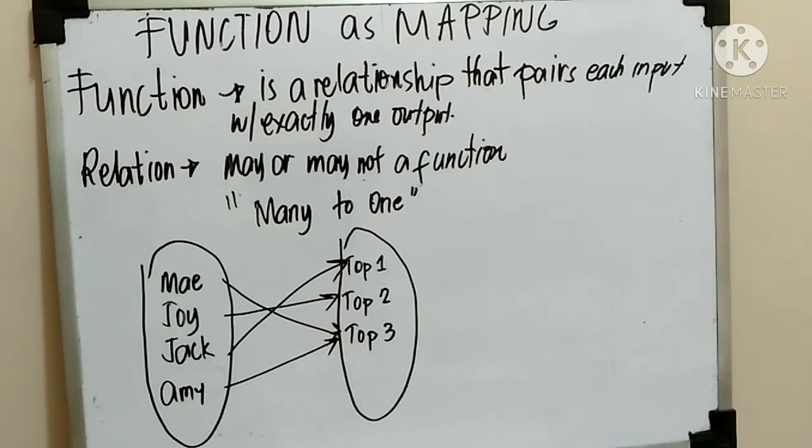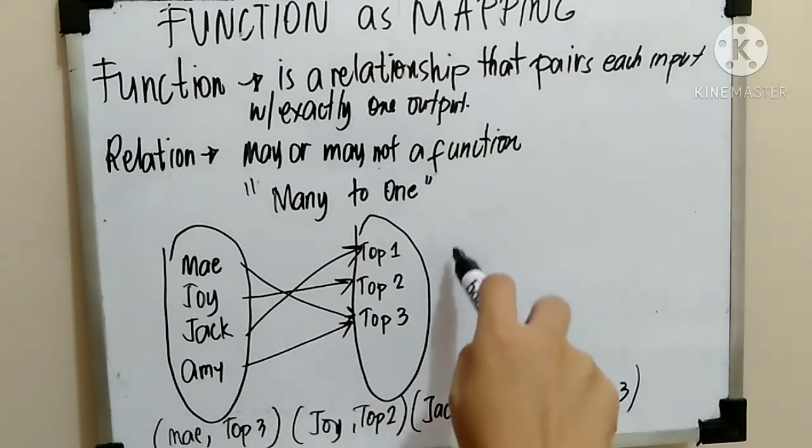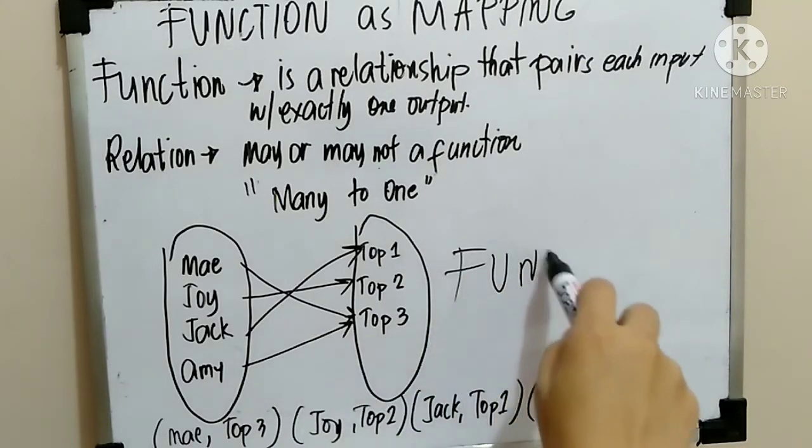Ano ang magiging sagot niyan? Function or not a function? Para malino para sa inyo, ang gagawin natin ay write natin ito ordered pairs. In order pair, we have May top 3, Joy top 2, Jack top 1, Amy top 3. Tingnan niyo maigi, yung domain natin hindi naulit. May, Joy, Jack, Amy. So, ibig sabihin, that is a function. Function, ganun lang po.